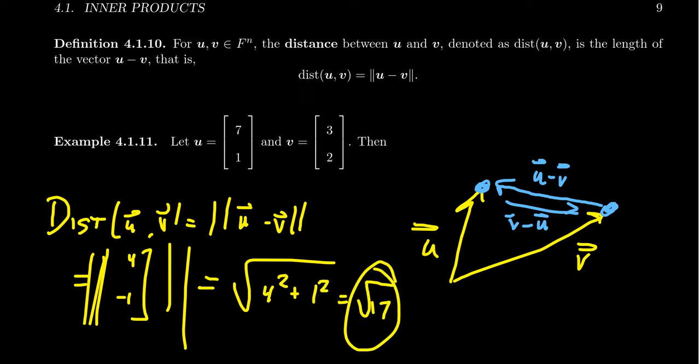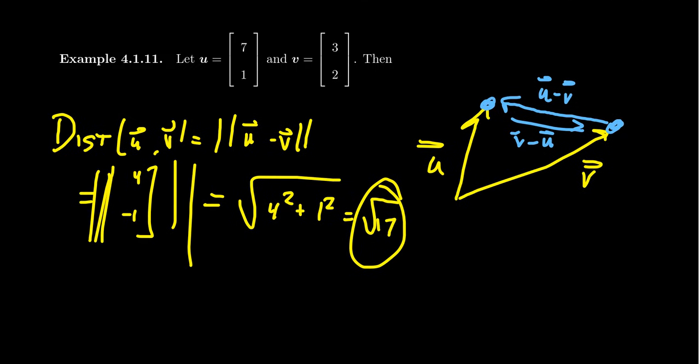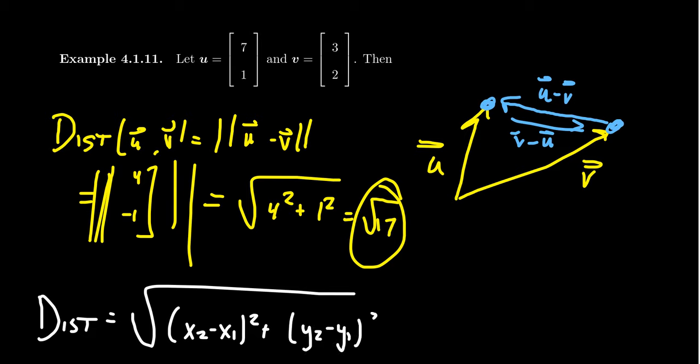And I want to mention that with this example here, I deliberately took vectors in R2, which we can identify with points in the plane, because you're probably used to the distance formula being something like the square root of x2 minus x1 squared plus y2 minus y1 squared, like a traditional analytic geometry type course.